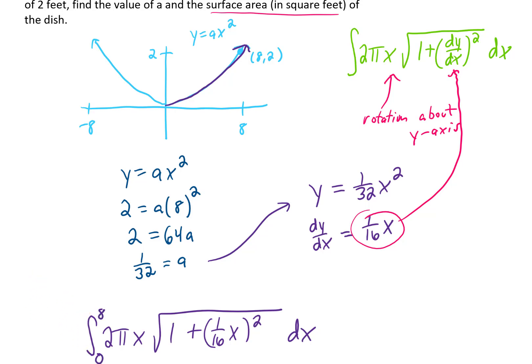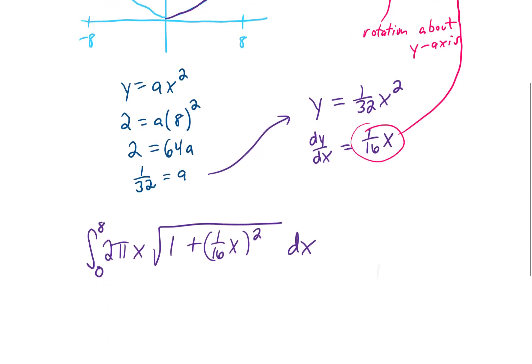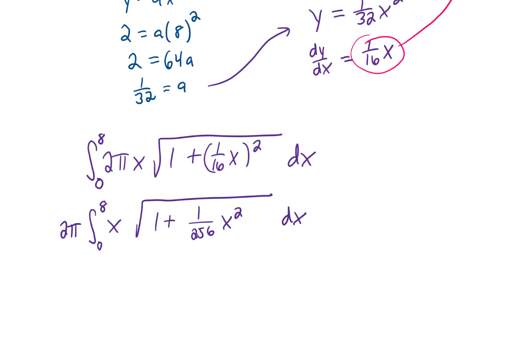Now that we have the integral set up, let's do some simplification. I brought the 2π out of the integral. I squared 1 over 16 x squared, and you'll notice this integral could be completed with a u substitution.